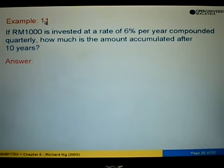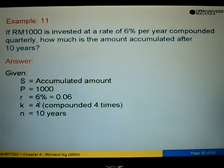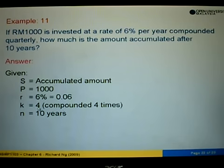In Example 11, if 1000 ringgit is invested at the rate of six percent per year compounded quarterly, how much is the amount accumulated after 10 years? Here, S is the accumulated amount which we are asked to find. P is the principal sum, which is 1000 ringgit. r is the interest rate, six percent per year, changed to 0.06. k is the number of times compounded — quarterly means four times a year, so k equals 4.